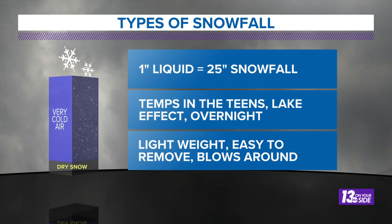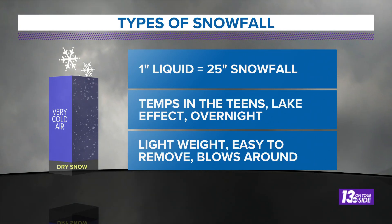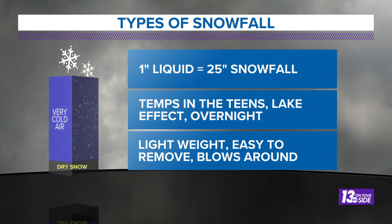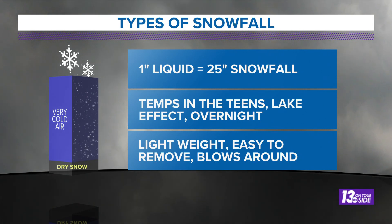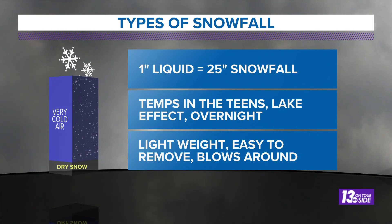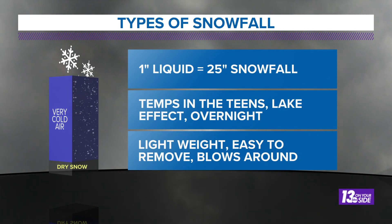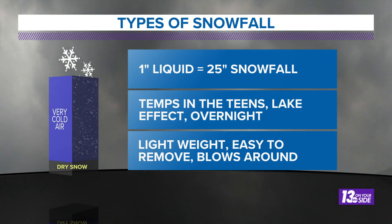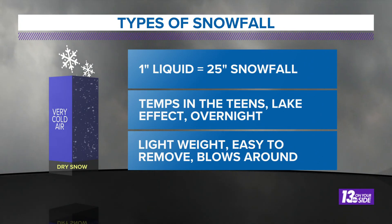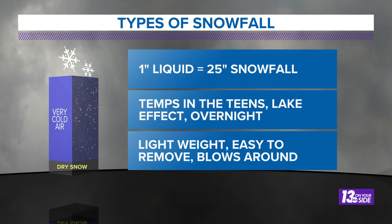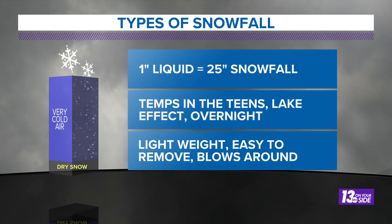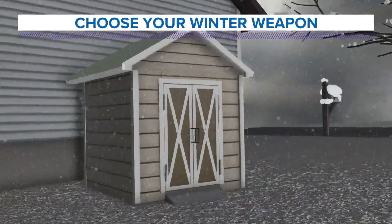Then we have the other end of the spectrum — the real easy stuff to get out of the way: that fluffy, light snowfall. One inch of liquid can equal in excess of 25 inches of snowfall during certain lake effect events, or when temperatures are really, really cold. In the teens, the atmosphere can't hold much moisture, but what does form totally forms as ice, giving you that real light, fluffy snow that's easy to remove.